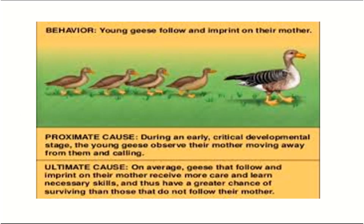Now we will look at an example of proximate and ultimate causes. During an early critical developmental stage, young geese observe their mother moving away from them and calling. The proximate cause is that this stimulus triggers the following behavior during the critical developmental period. The ultimate cause is that geese that follow and imprint on their mother receive more care and learn necessary skills.